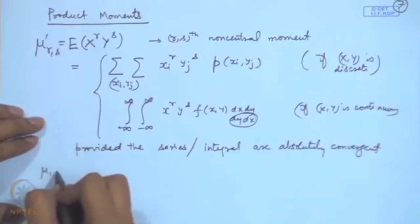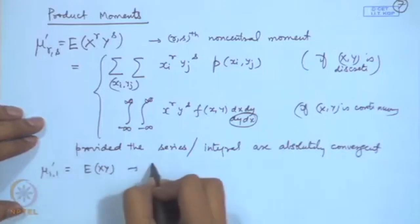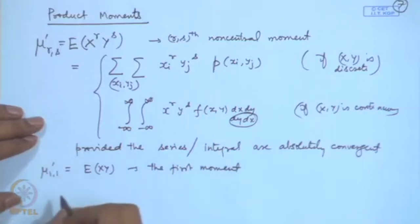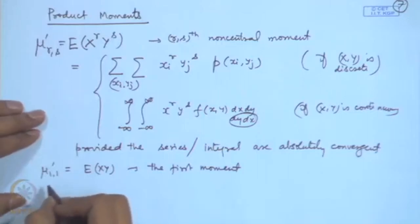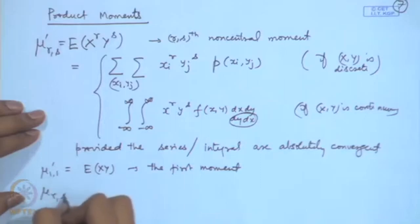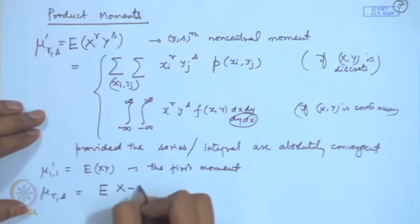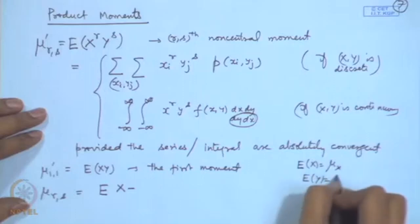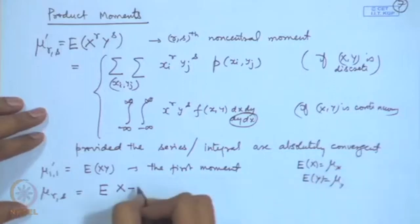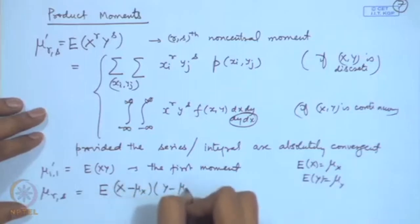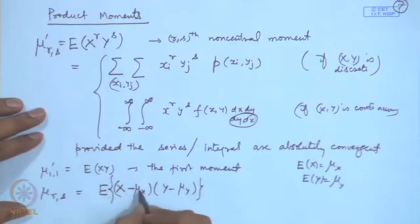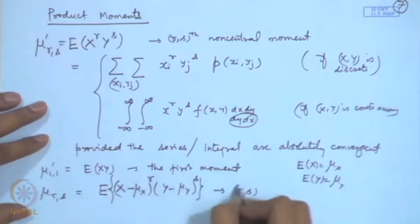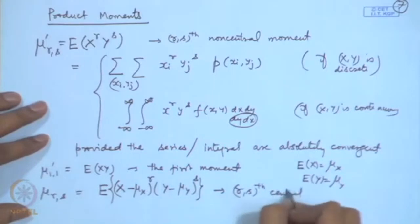In particular, μ'_{11} = E(XY) is called the first product moment. We can also define central product moments: μ_{rs} = E[(X−μ_X)^r (Y−μ_Y)^s], called the r,s-th central product moment, where μ_X = E(X) and μ_Y = E(Y). In particular for r=1, s=1, that is E[(X−μ_X)(Y−μ_Y)], is defined as the covariance between X and Y.